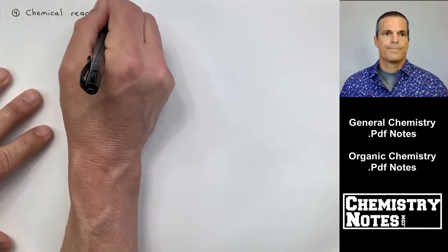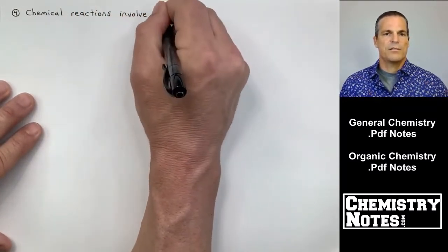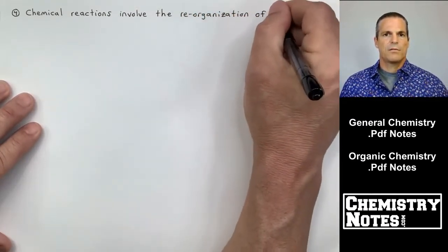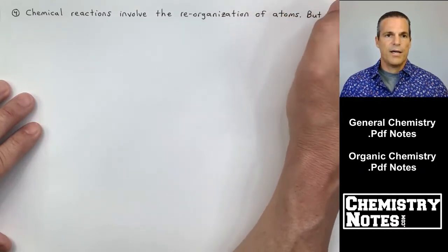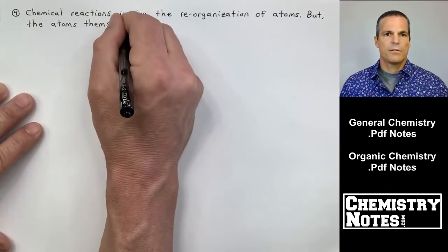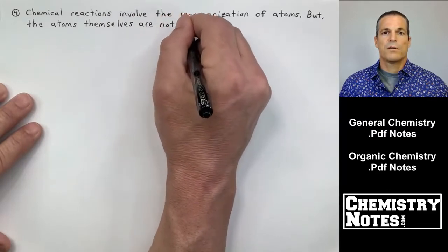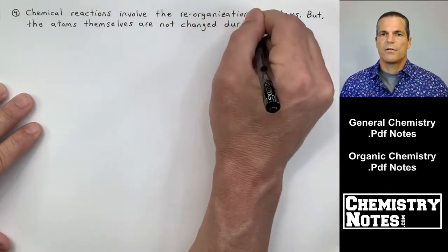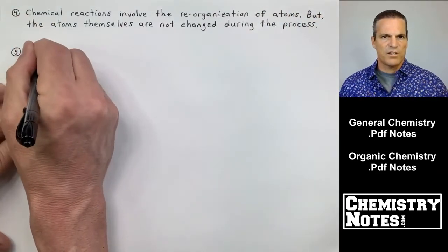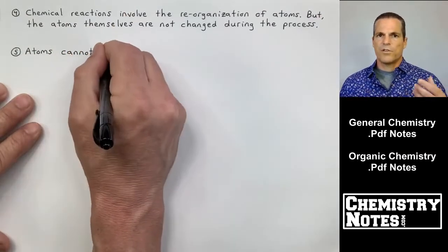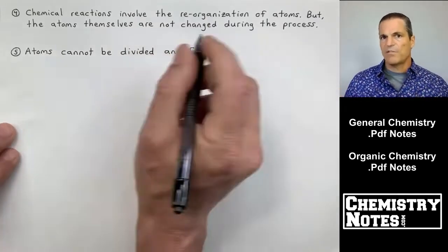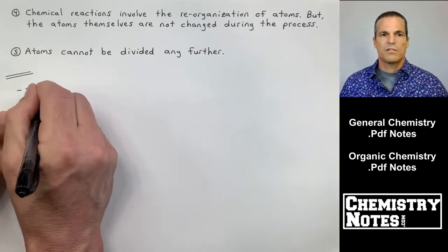Now in number four, it says chemical reactions involve the reorganization of atoms, but the atoms themselves are not changed during the process. He's hinting at the law of conservation of mass. Whatever you start with on the left-hand side with the reactants and you rearrange everybody, you have to have the same number and types of atoms on the right that you started with, law of conservation of mass.